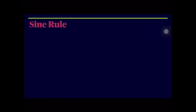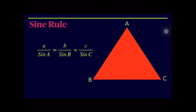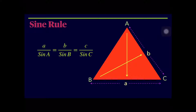In the formula a/sin A = b/sin B = c/sin C, the small letter a refers to the length of side a, while the capital letter A refers to angle A. Small letter b refers to the length of side b and capital B refers to angle B. Small letter c refers to the length of side c and capital C refers to angle C.